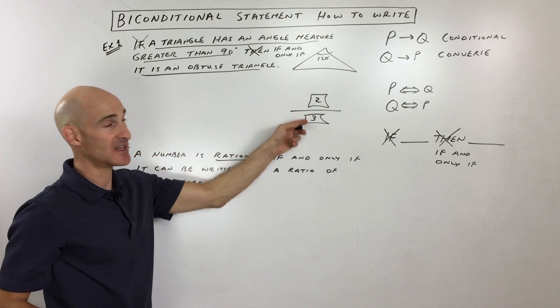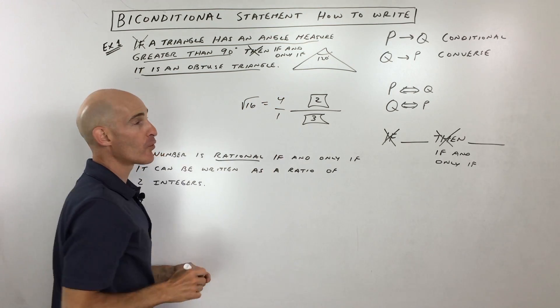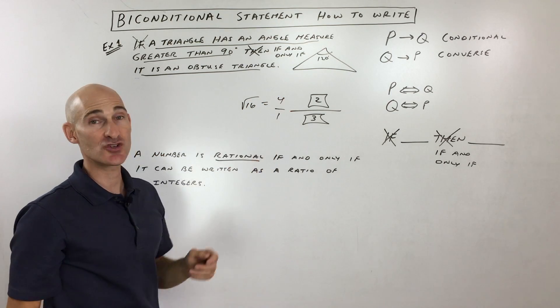So for example, two-thirds. That's rational because it's an integer over an integer. Say, for example, square root of 16. That's equal to four, which is like four over one. That's a ratio of an integer over an integer.